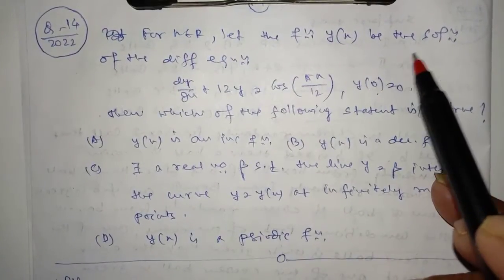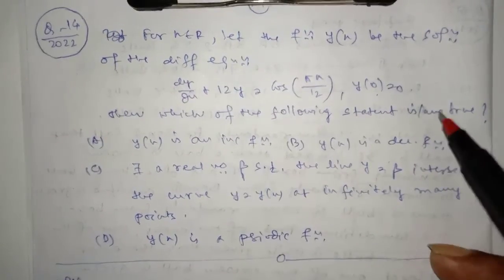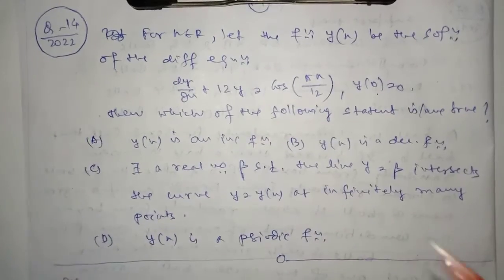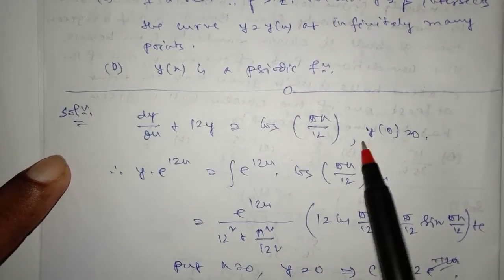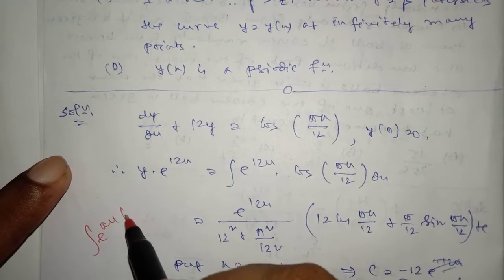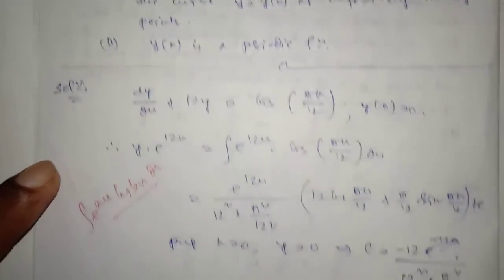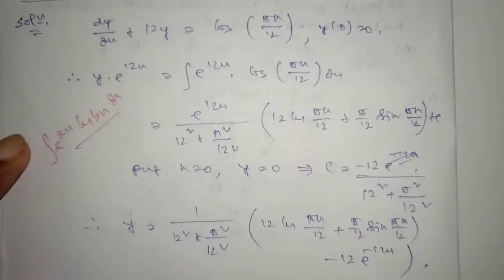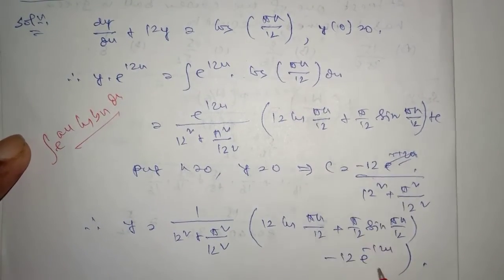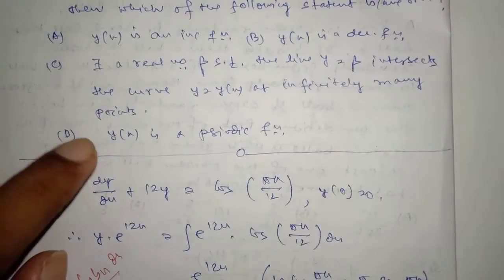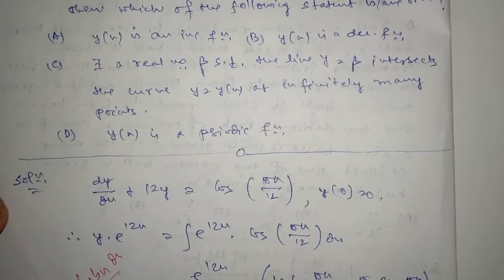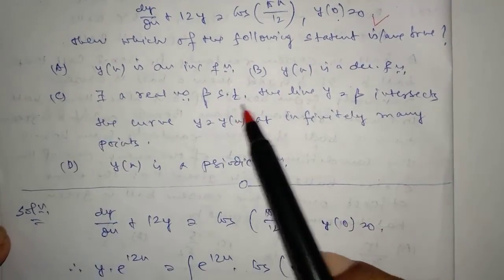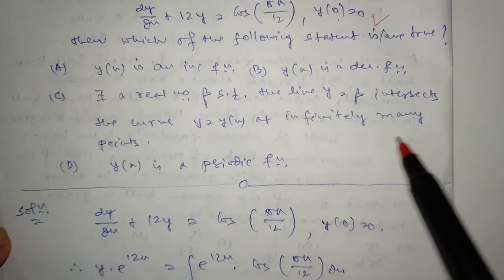Question 14: For x ∈ ℝ, let y(x) be the solution of the linear differential equation. The integrating factor is e^(12x). Applying the formula for ∫e^(ax)·cos(bx)dx. With initial condition x=0, y=0, the constant c is determined and y is fully found. The function is not periodic. Option C is correct: there exists a real number β such that the line y = β intersects the curve at infinitely many points.